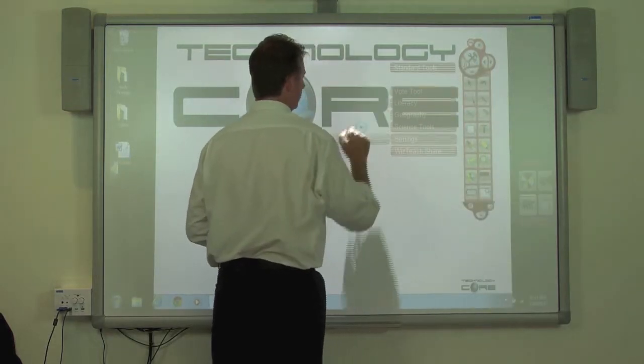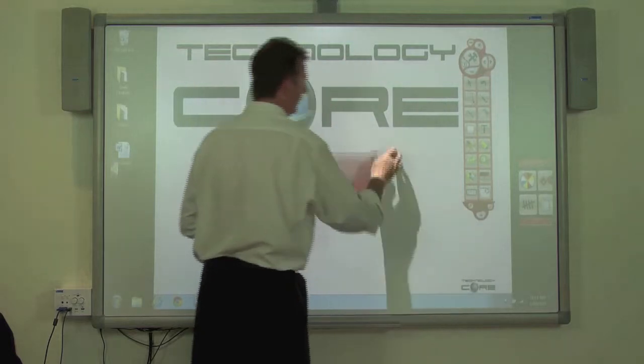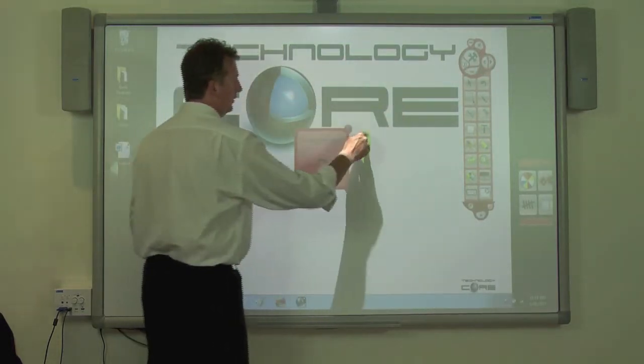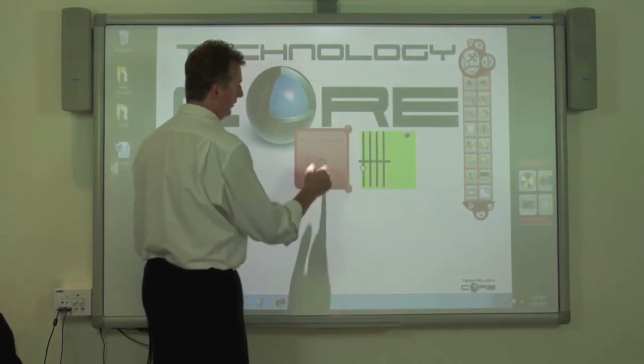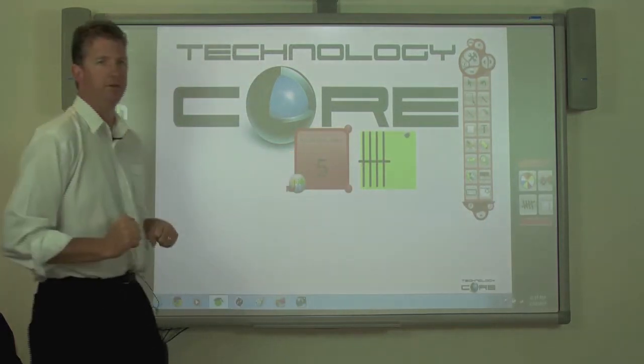The last one we've got, or second last, sorry, is our tally marks. So this is just your run-of-the-mill tally marks, and that will give us the number.